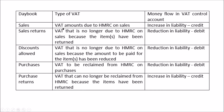The sales day book: VAT amounts due to HMRC on sales increase the liability — credit. Sales returns: VAT no longer due to HMRC because items were returned — reduction in liability — debit. Discounts allowed: VAT no longer due because the amount has been reduced — reduction in liability — debit. Purchases day book: VAT reclaimed from HMRC on purchases reduces the HMRC liability — debit.